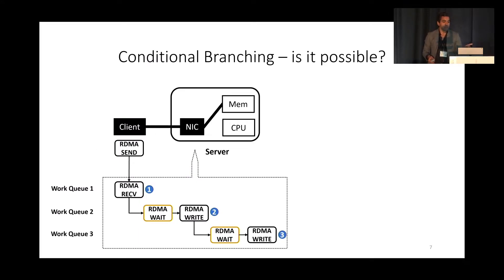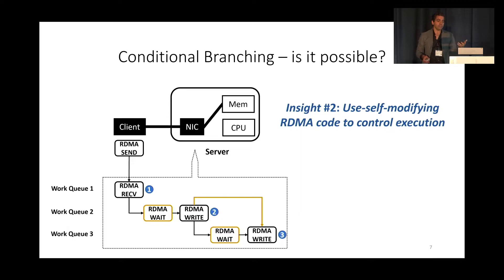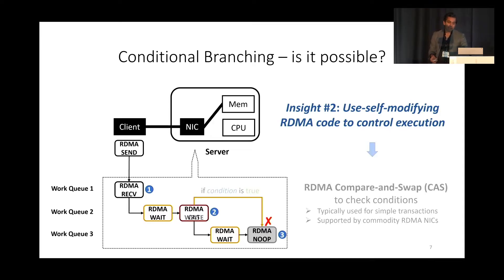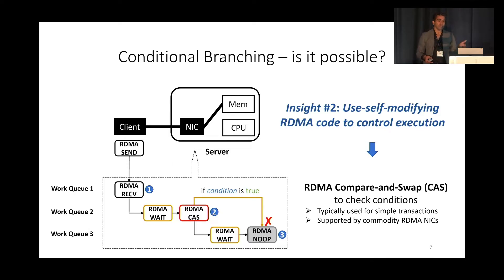Let's start with requirement R2, which is conditional branching. Our main insight is to use self-modifying RDMA code to control the execution of operations. This can be done because RDMA operations are posted in memory, which means they can be modified by other RDMA operations. For example, RDMA write 2 can modify RDMA write operation 3 and change it into a no-op. To make this conditional rather than unconditional, we found that the compare-and-swap verb, which is available on commodity NICs, can be used to conditionally execute certain operations.